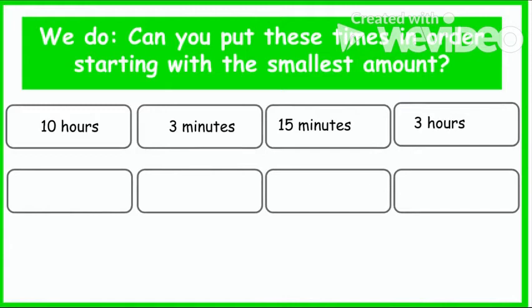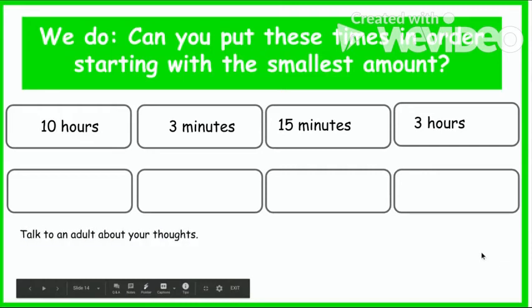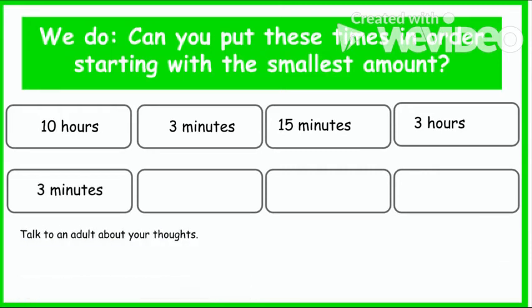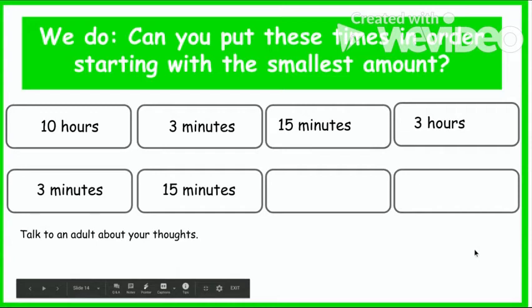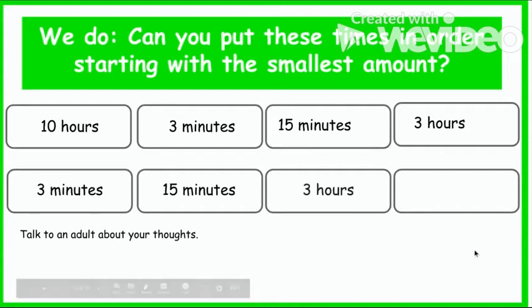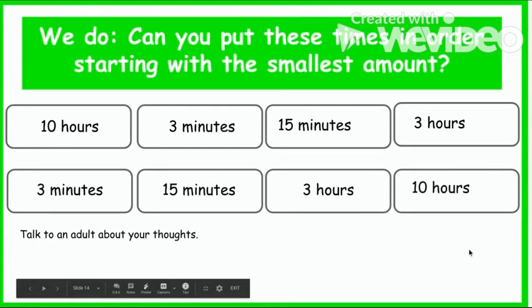Can you put these times in order starting with the smallest amount? This time we've got some hours and minutes: 10 hours, 3 minutes, 15 minutes, and 3 hours. Which one do you think should go first? You should have put 3 minutes first, because minutes are shorter than hours. Then 15 minutes, 3 hours, and 10 hours.